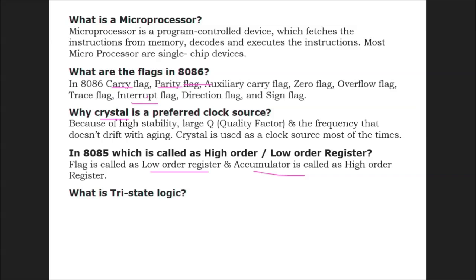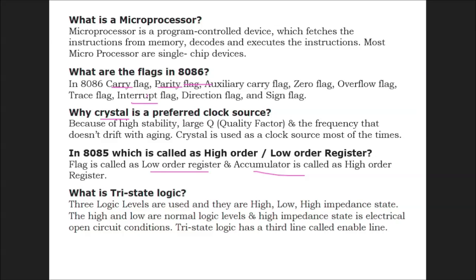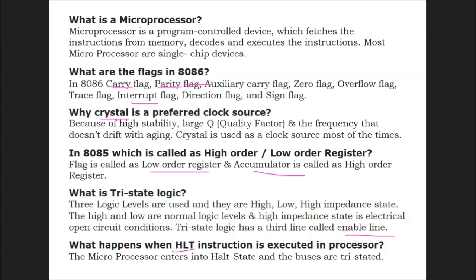What is tri-state logic? Three logic levels are used: high, low, and high impedance state. The high and low are normal logic levels, and high impedance state is an electrical open circuit condition. This tri-state logic has a third line called an enable line. What happens when HLT instruction is executed in the processor? The microprocessor enters into halt state and the buses are tri-stated.